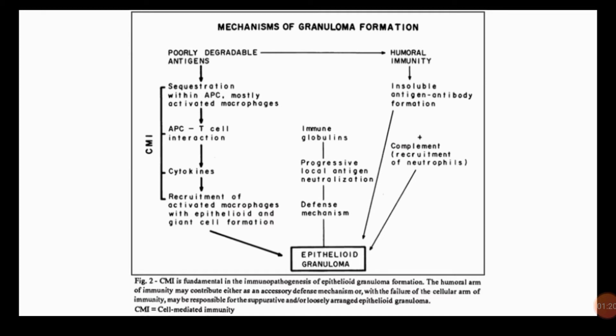Epithelioid cells are activated macrophages in granuloma that have pink granular cytoplasm with distinct cell boundaries. They are called epithelioid cells because of their resemblance with epithelia. A giant cell is a multi-nucleated large cell formed by the union of several cells, usually histiocytes.